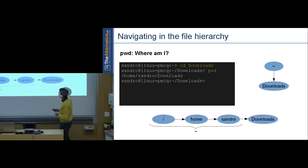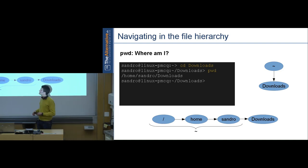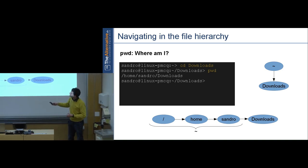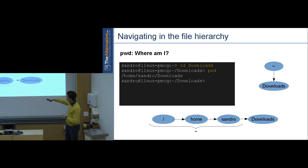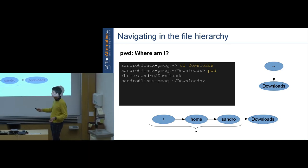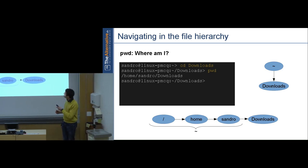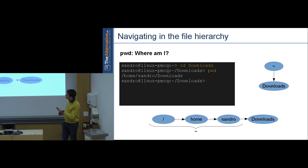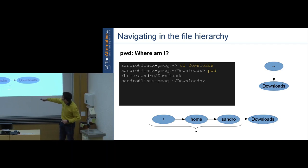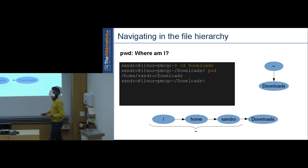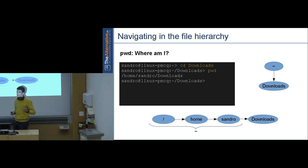The second command is 'pwd' — print working directory — which answers: where am I in the system? If you type it, the answer might be '/home/sandro/downloads'. That tells you that tilde means '/home/sandro' — your home folder. If you are a different user, your home folder will be '/home/your-username'. PWD gives you an absolute path without any shorthand notation.